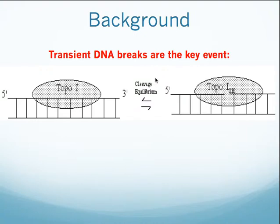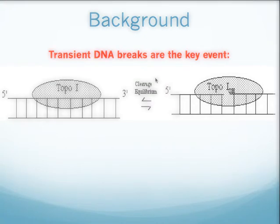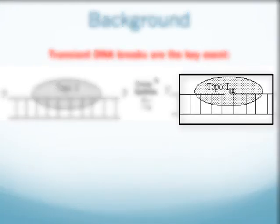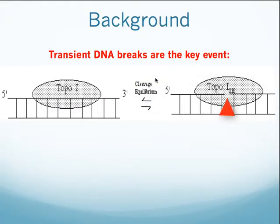By way of background, topoisomerase enzymes share a common feature. They transiently break and reseal the DNA backbone. This is actually not a hydrolysis step, but a transesterification reaction. This explains why the broken intermediate, shown on the right here, is fleeting.